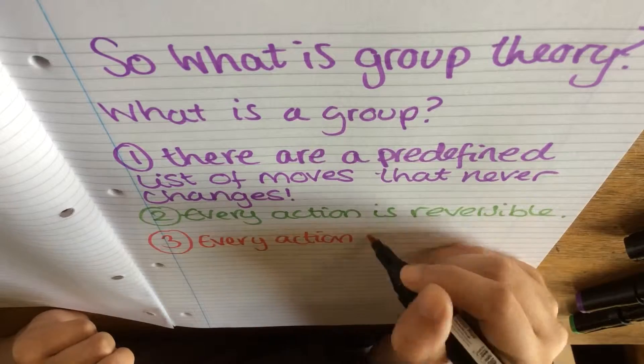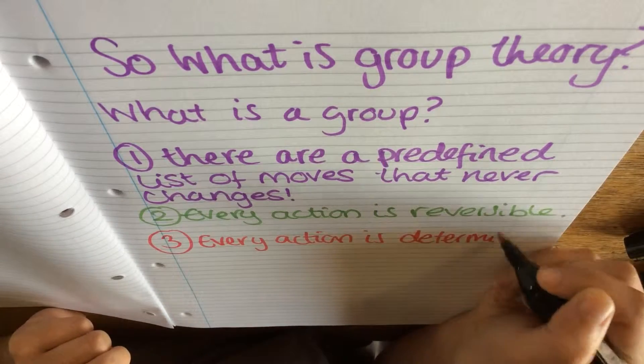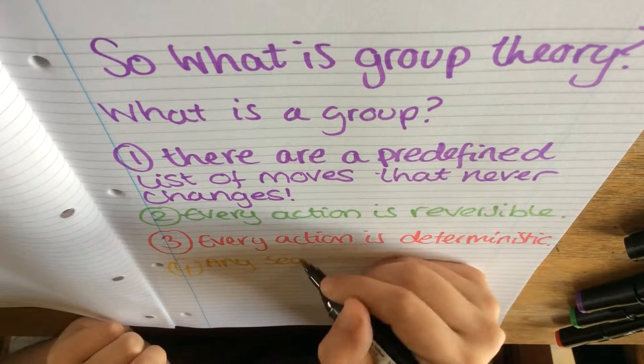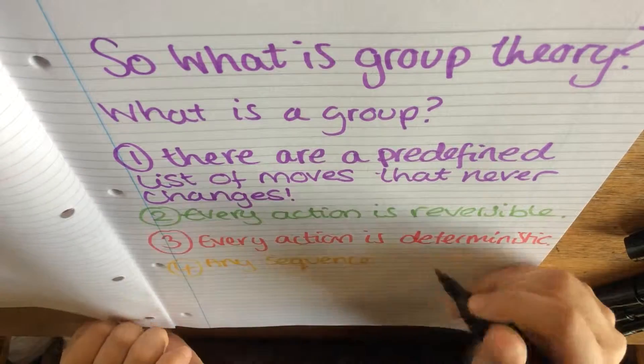Third rule is, every action is deterministic. And finally, any sequence of consecutive actions is also an action.